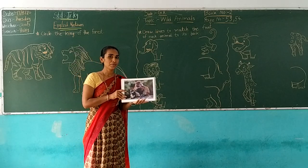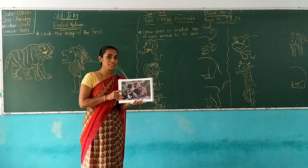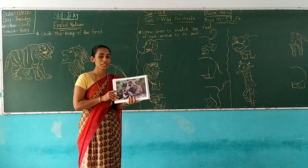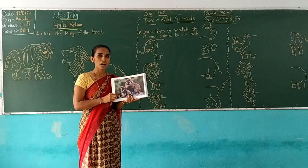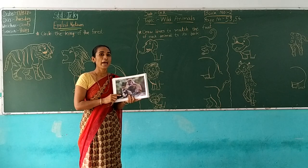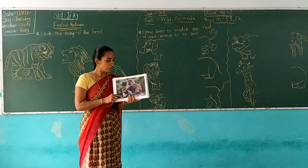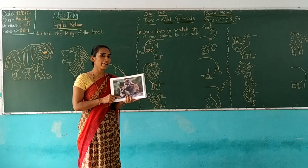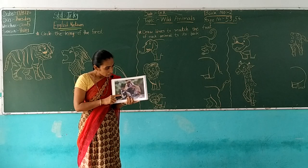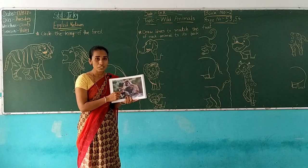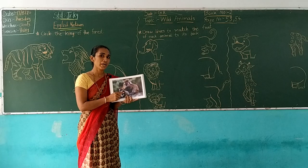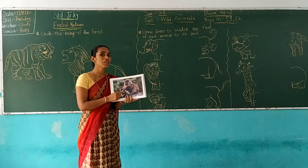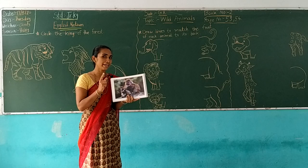Which animal is this? It's a monkey. M for monkey. Monkey lives on tree. Look at this picture — which color is the monkey? Brown color, and also in white color.